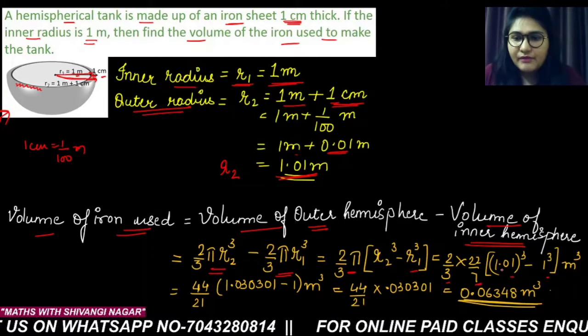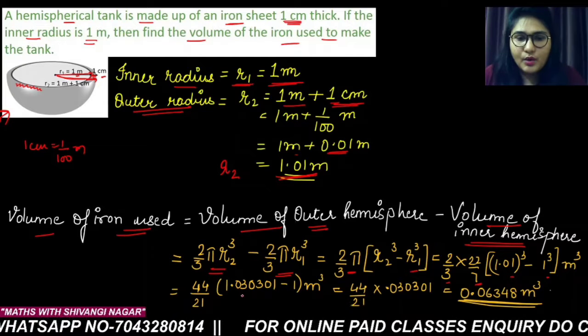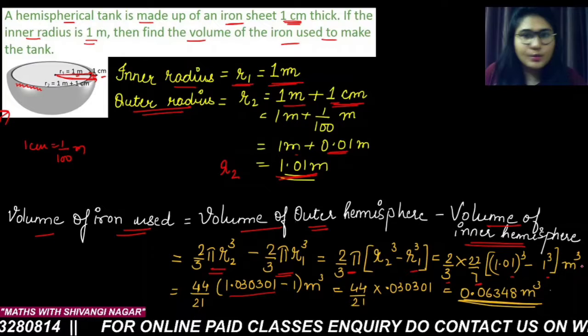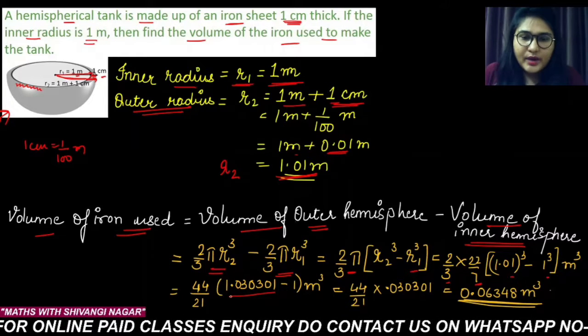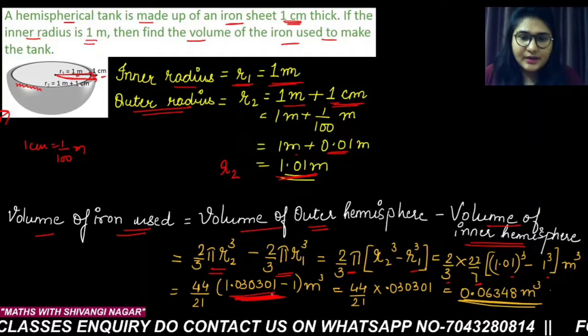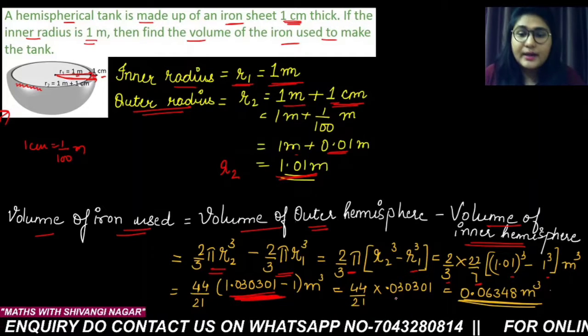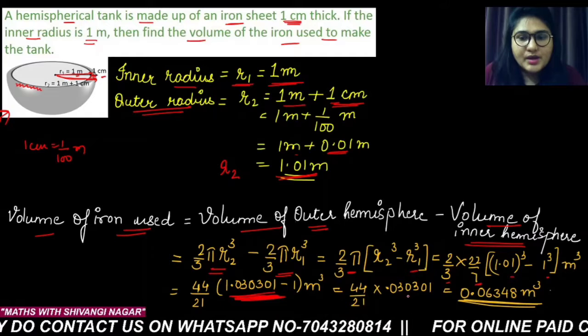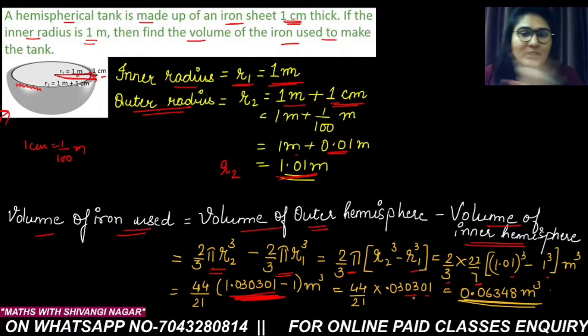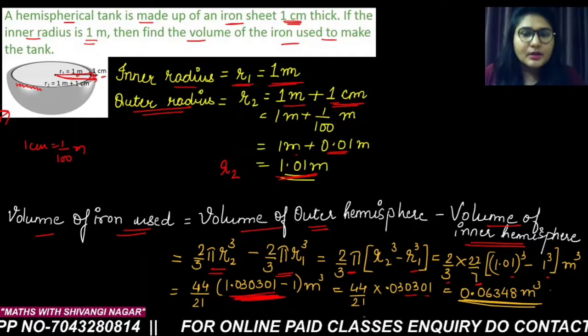And 1.01 whole cube is 1.030301. And 1 cube is as it is 1 only. Now when you solve this bracket, you have to do subtraction. So when you subtract the 1 from this number, what you will get? You will get 0.030301. And when you multiply all these quantities and you divide it with the 21, what you will get?